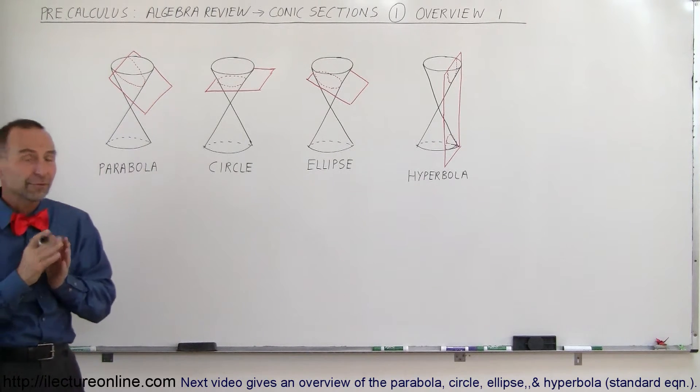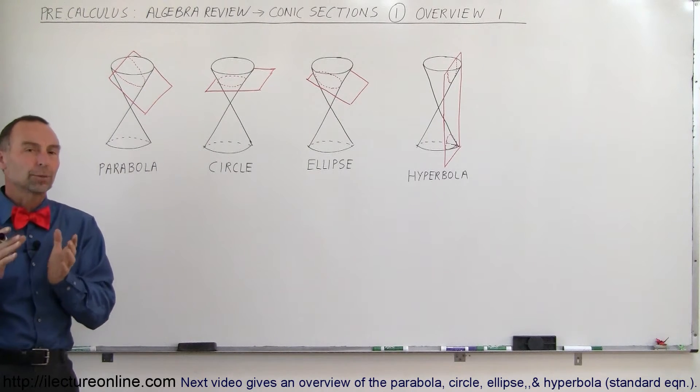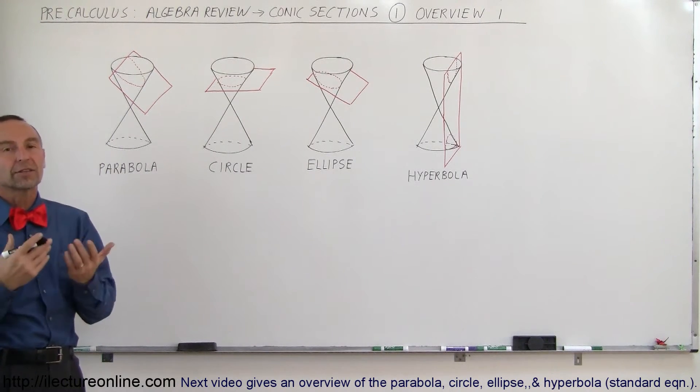In this series, we're going to visit the parabola, the circle, the ellipse, and the hyperbola. These are what we call the conic sections.